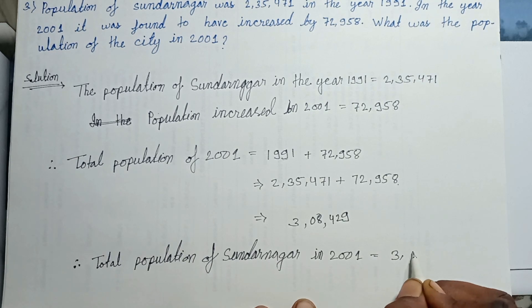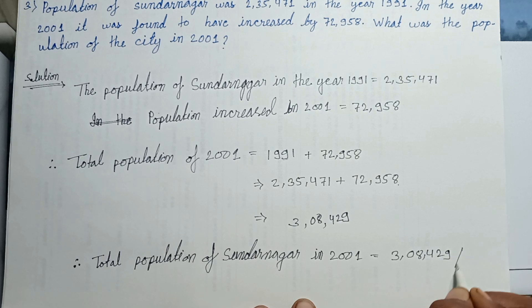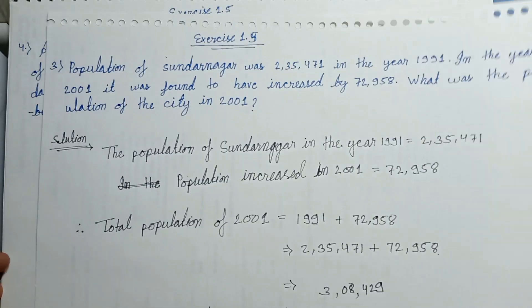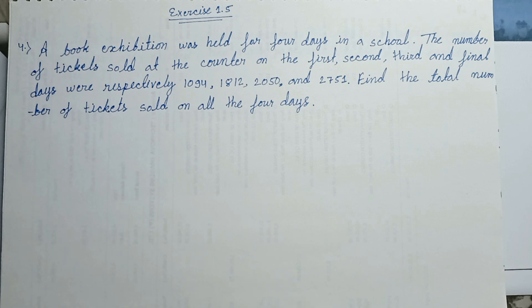The total population of Sundar Nagar in 2001 is 308,429. This is the answer. In the next episode, we'll solve Question number 4. See you soon.